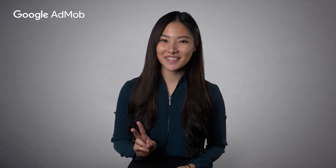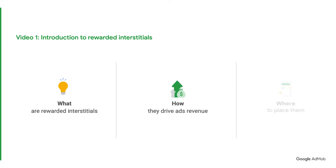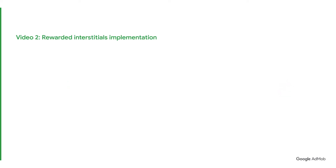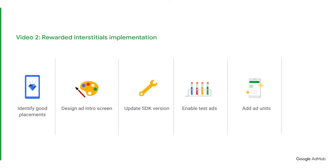Welcome back to another Google AdMob tutorial. This is the second and final video of our Rewarded Interstitials series. In the first video, we learned about what Rewarded Interstitials are, how they drive ads revenue, and where to place them. In this video, we will be focusing on Rewarded Interstitials implementation. This includes identifying good placements, designing your ad's intro screen, updating your SDK version, enabling test ads, and adding ad units. Lastly, you'll learn how to use Firebase A-B testing to get the best results for your app.